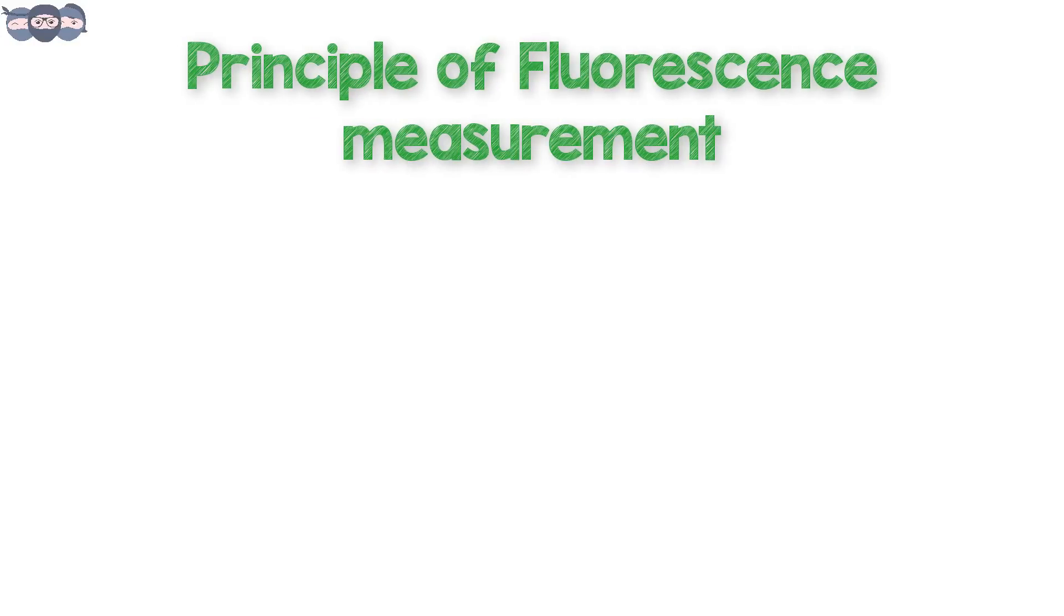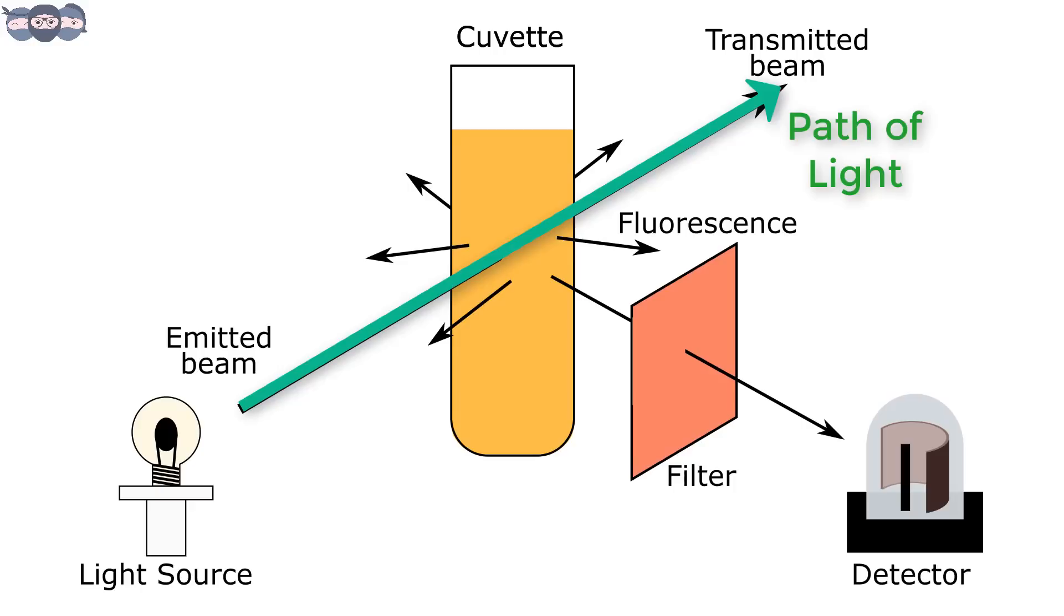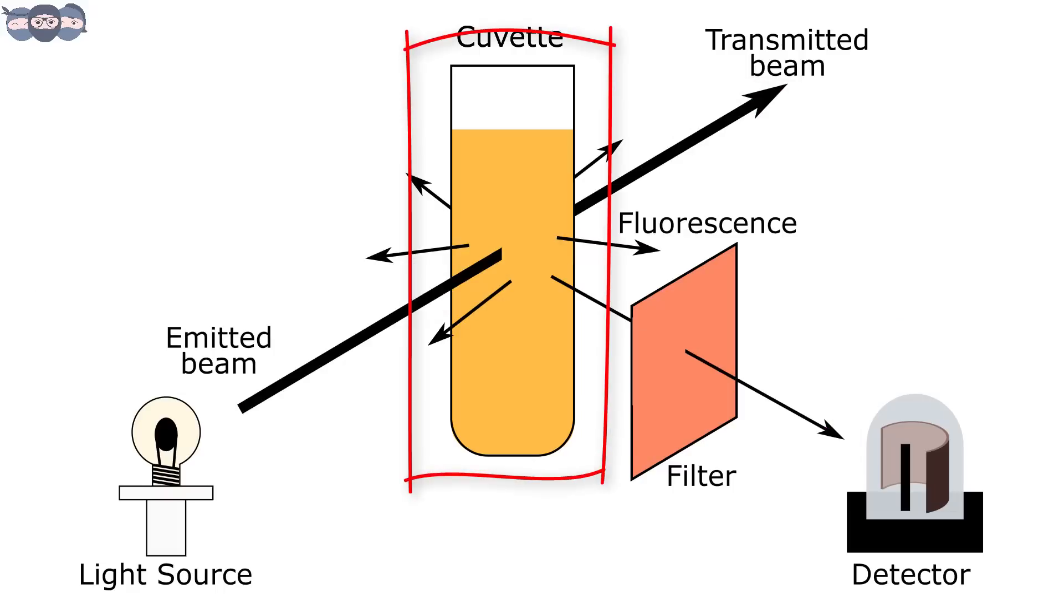Now let us try to understand the principle of fluorescence measurement. Again, we can refer to the diagram shown here. As seen, the detector is placed perpendicular to the light path of emitted source. The analyte is placed in the cuvette.